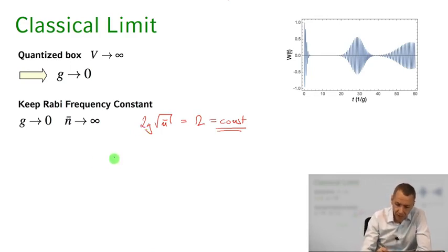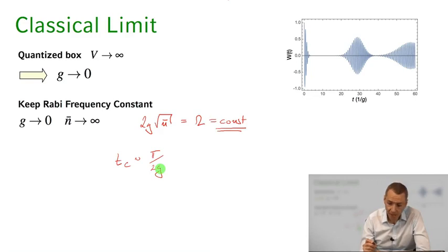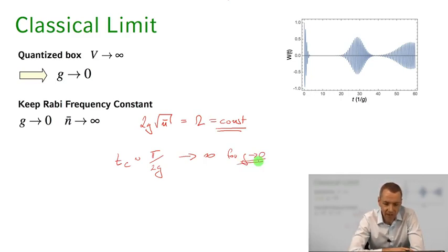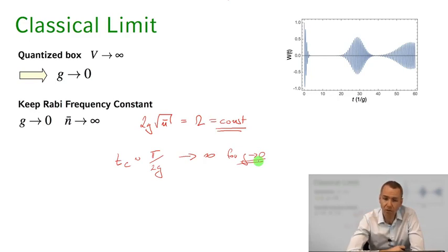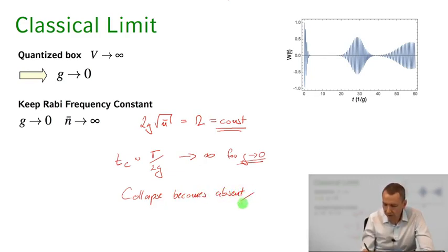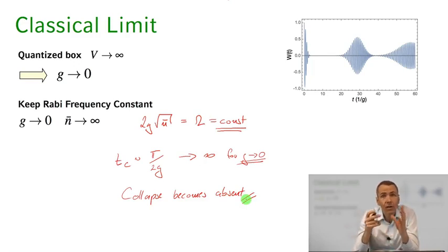If that's the case, the collapse time — which was pi over 2g — goes to infinity as g goes to zero. And that's exactly what we encounter in the classical limit: this gives us the absence of collapse and revival phenomena. So by taking the box to infinity with the coupling constant to zero, while increasing √n-bar to keep the Rabi frequency constant, we see that the collapse becomes absent.